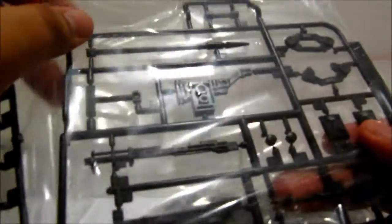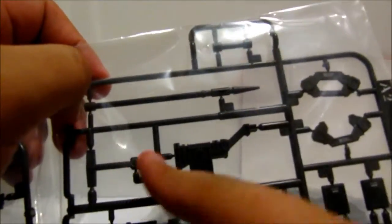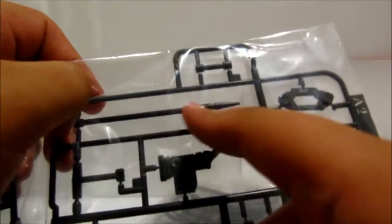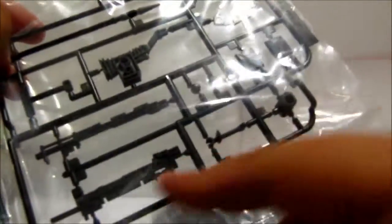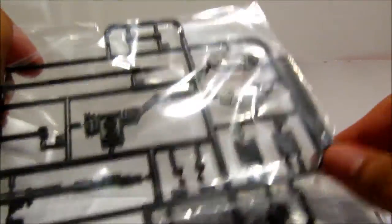You can see right here, here's some of the Heat Sword parts like the staff thing. Here's some of the Beam Rifle parts.